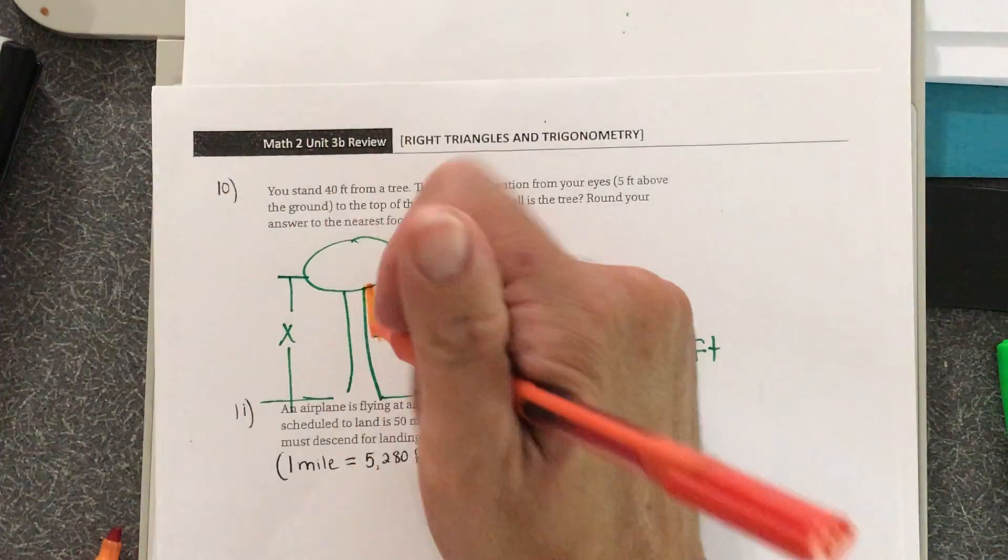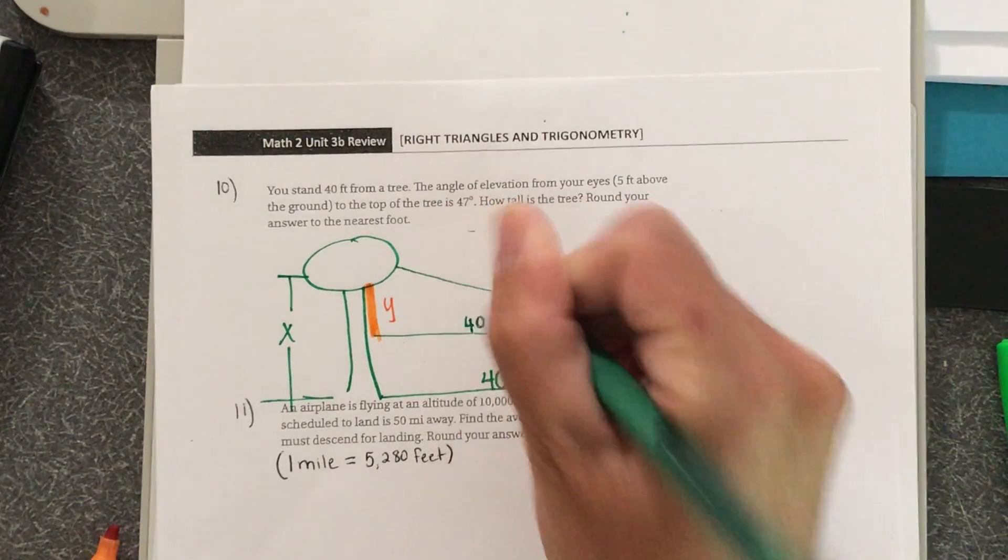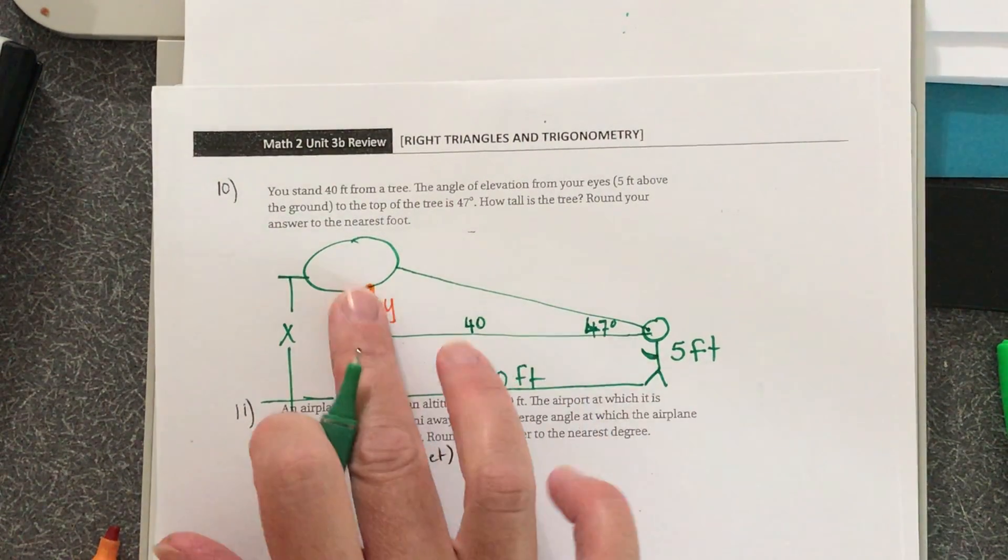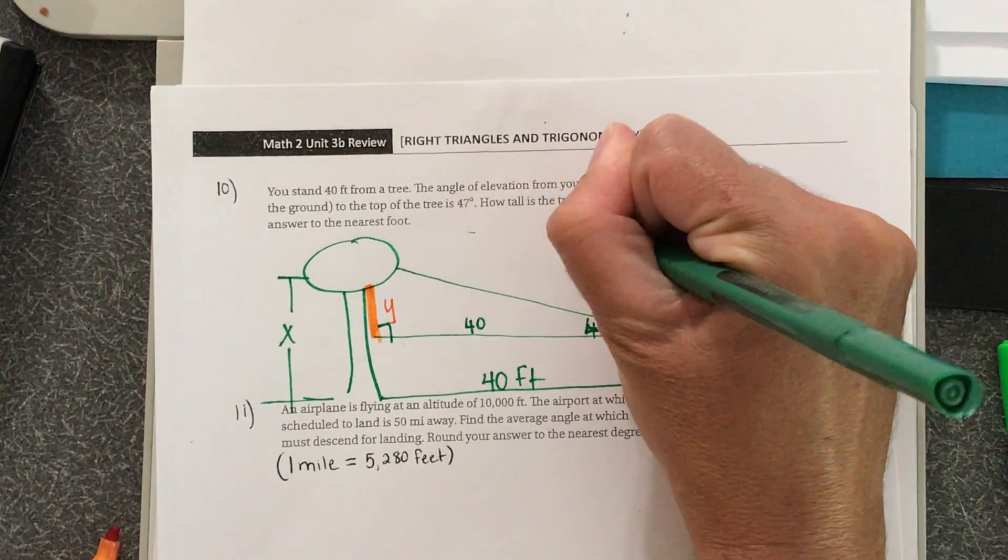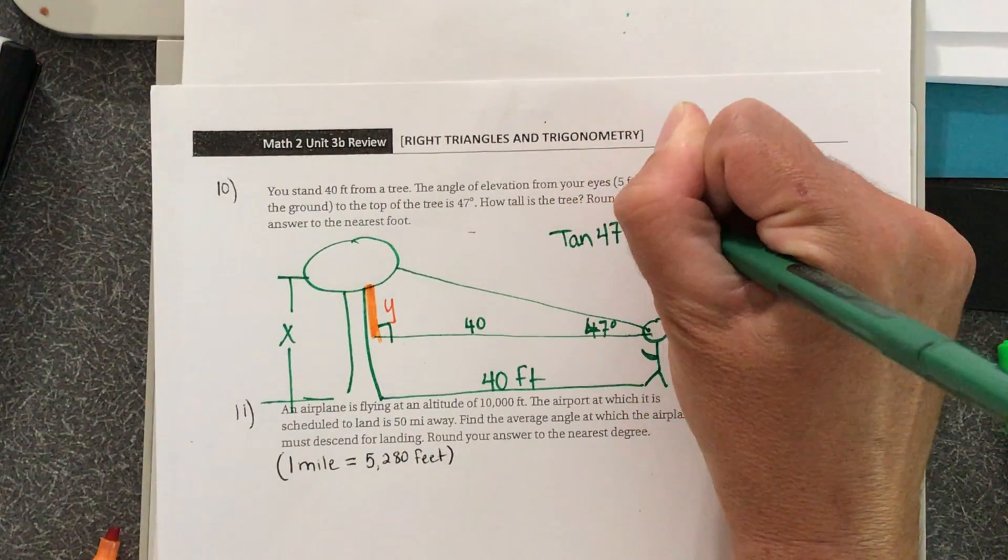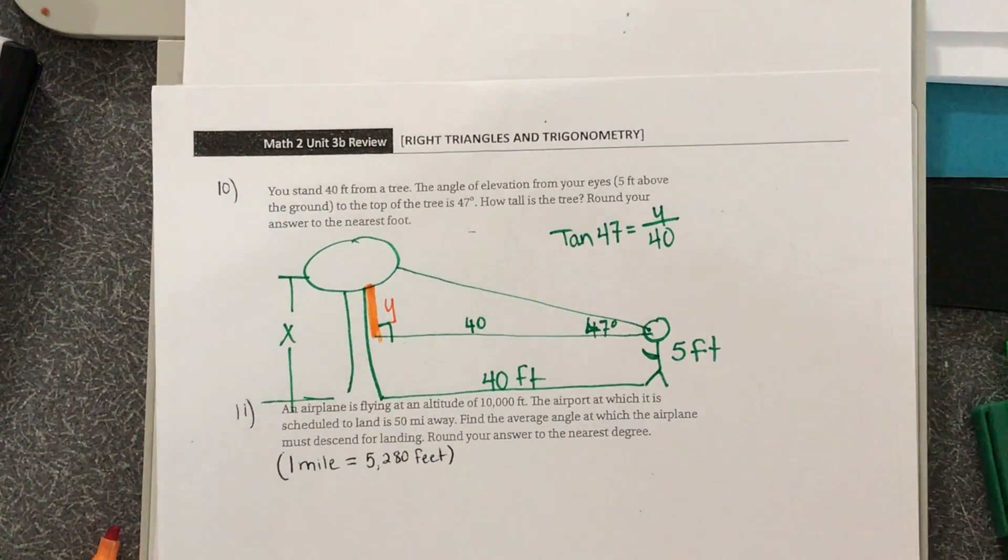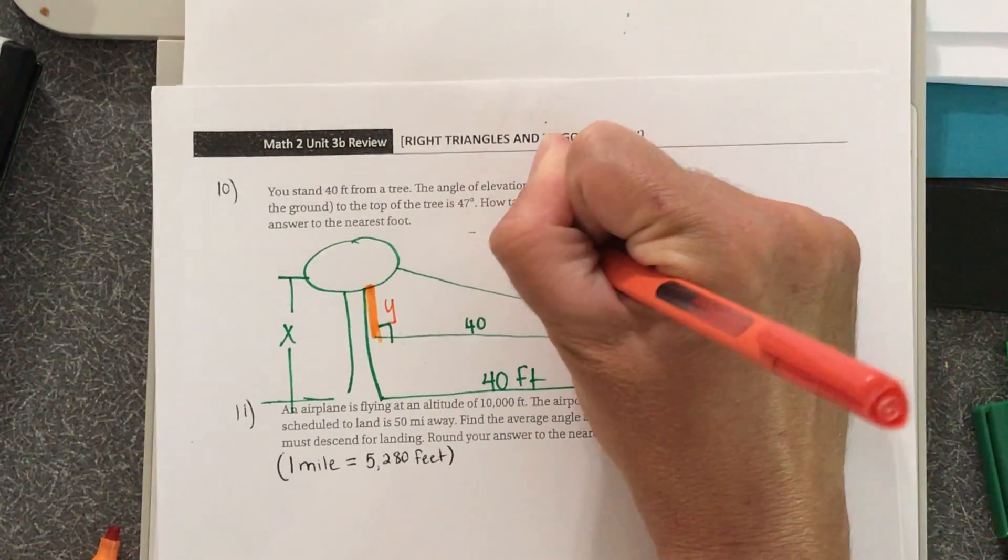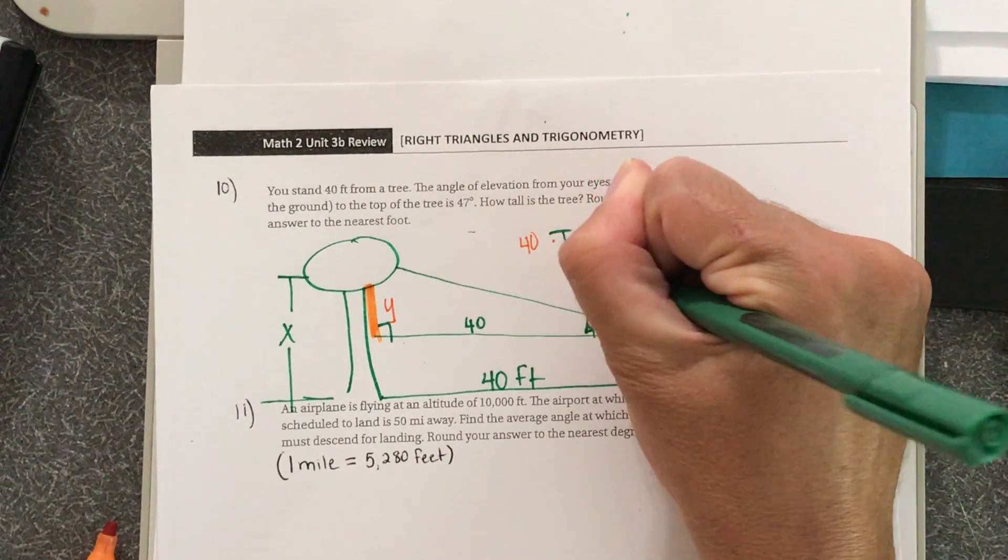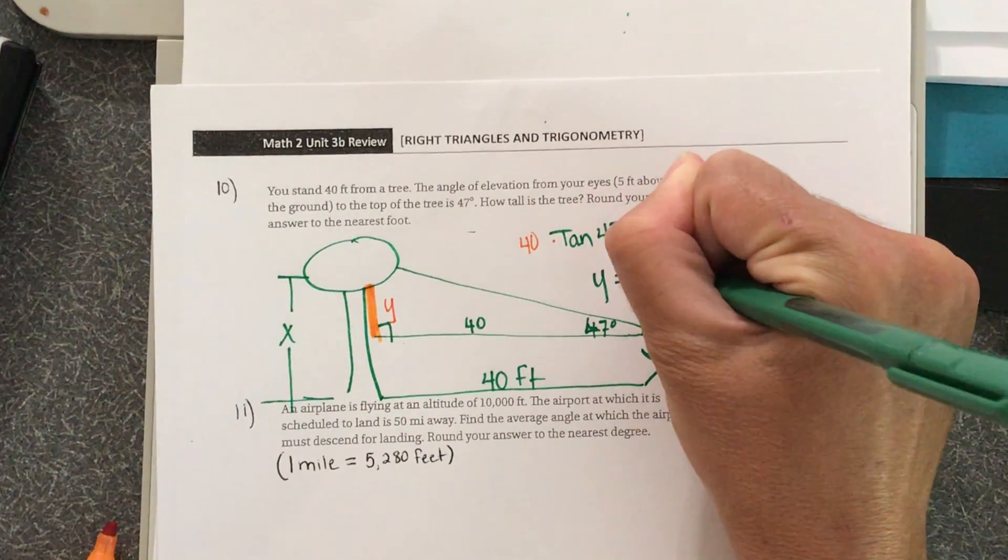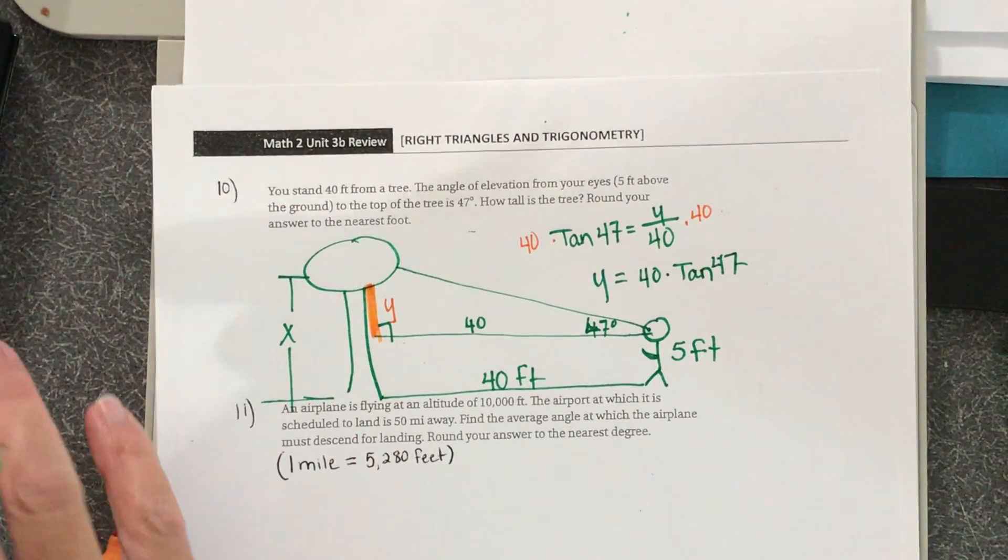Looks like we're gonna be using opposite and adjacent. So tangent of 47 equals Y over 40. Multiply both sides by 40 to get Y by itself, so Y equals 40 times tangent of 47. Type that into your calculator.